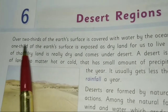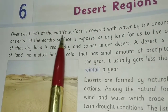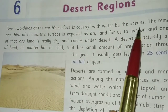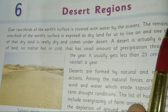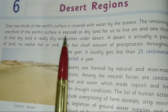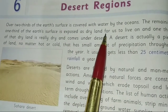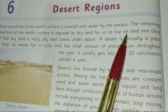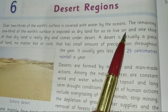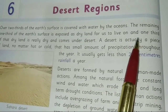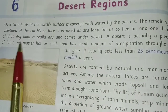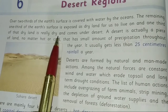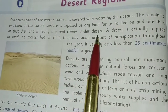Over two-thirds of the earth's surface is covered with water by the oceans. The remaining one-third of the earth's surface is exposed as dry land for us to live on. And one-third of that dry land is really dry and comes under the desert.